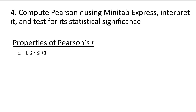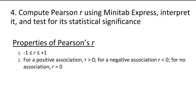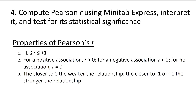First, Pearson's R must be between negative 1 and positive 1 — it is not mathematically possible for R to be outside of this range. Second, for a positive association R is greater than 0; for a negative association R is less than 0; for no association R equals 0. The sign of R gives us information about the direction of the relationship. Third, the closer to 0, the weaker the relationship; the closer to negative 1 or positive 1, the stronger the relationship — the numerical value of R gives us information about strength.